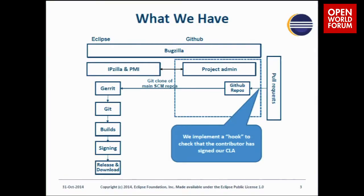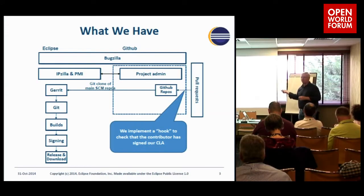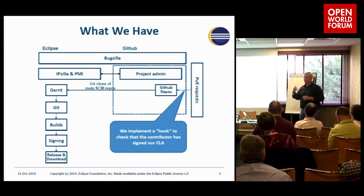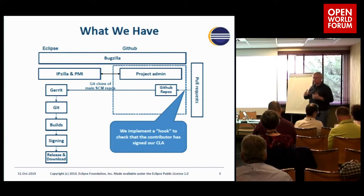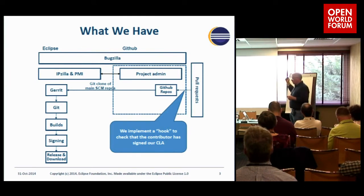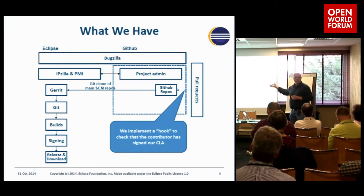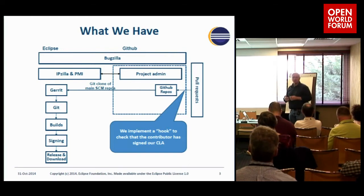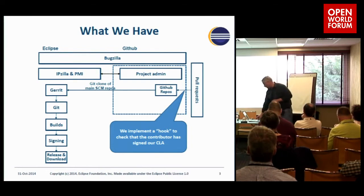One of the things we built is a GitHub hook so that we can verify, before a committer accepts a pull request, that the person who wrote that pull request has signed the Eclipse contributor agreement. That's open source, by the way — if anybody else wants to do similar stuff, you can talk to me. I can show you where the GitHub repo is, and we're happy to see people use that.